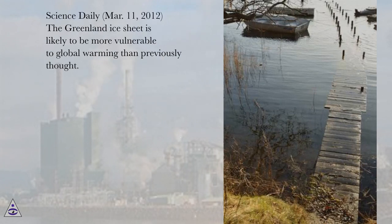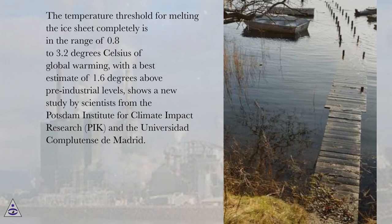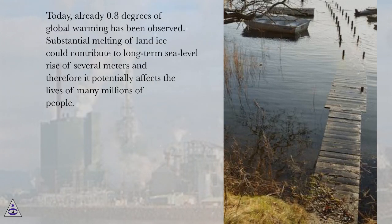Science Daily, March 11, 2012: The Greenland Ice Sheet is likely to be more vulnerable to global warming than previously thought. The temperature threshold for melting the ice sheet completely is in the range of 0.8 to 3.2 degrees Celsius of global warming, with a best estimate of 1.6 degrees above pre-industrial levels, shows a new study by scientists from the Potsdam Institute for Climate Impact Research (PIK) and the Universidad de Competencia de Madrid. Today, already 0.8 degrees of global warming has been observed. Substantial melting of land ice could contribute to long-term sea level rise of several meters, potentially affecting the lives of many millions of people.